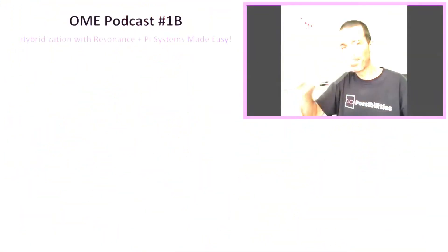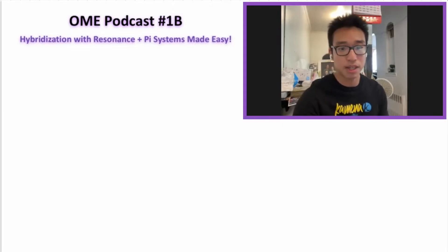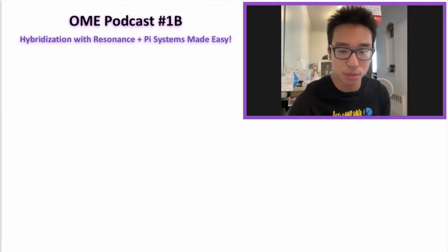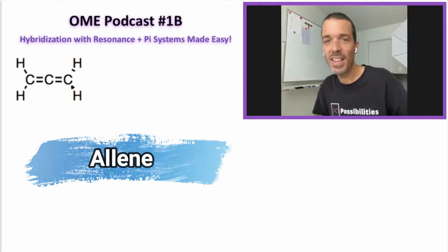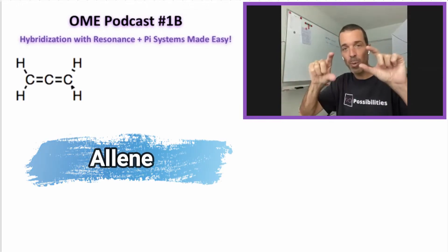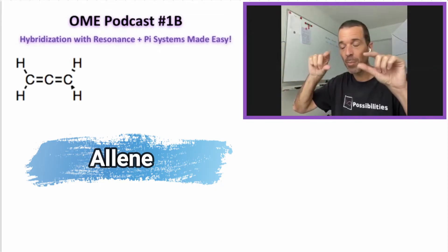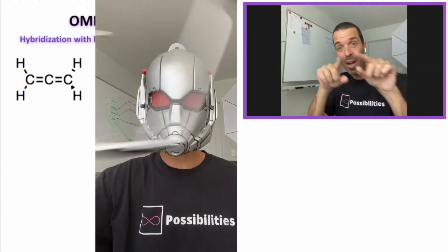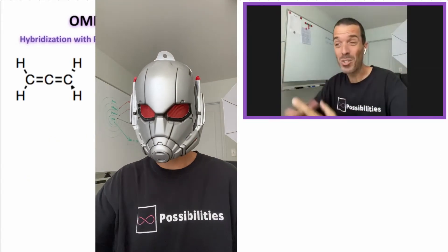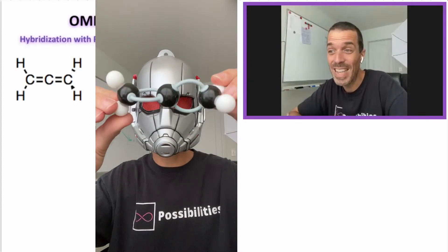So that was diazomethane, and next we have a really cool molecule called allene. It looks simple but it's actually a little complicated. What's unique about allene is that instead of a carbon-carbon double bond followed by a single bond, this one has a double bond followed by another double bond. We need to figure out what's going on and whether this is even possible.